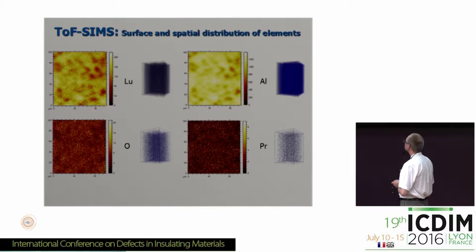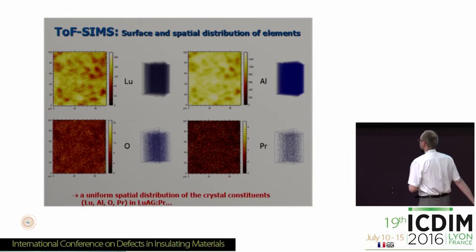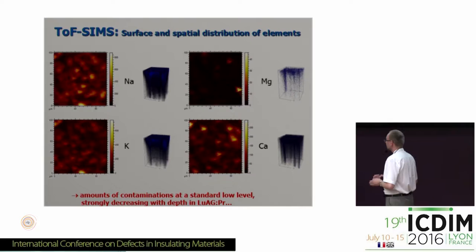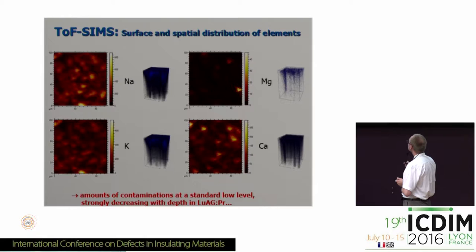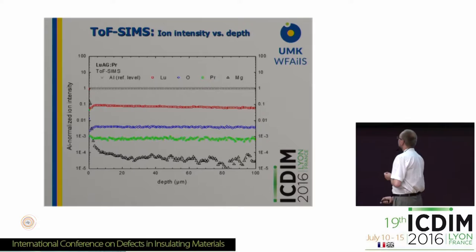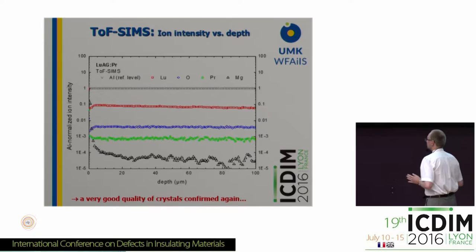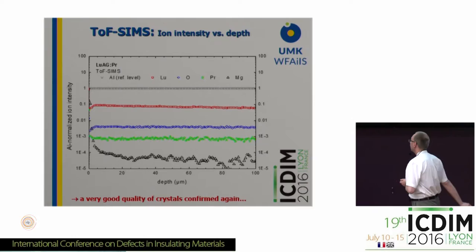Now some TOF-SIMS plots. Here we see the structure of selected layers and the spatial distribution of elements — first for the crystal constituents, which looks fine, and then for some contaminations inside the crystals. There are some elements that contaminate these crystals, but their level is very low, just on the standard low level, and the amount of contaminations strongly decreases with crystal depth. The depth profiles from the TOF-SIMS method show that for the crystal constituents there are almost vertical lines, while an exemplary contamination decreases with depth. So the good quality of the crystals is confirmed again.